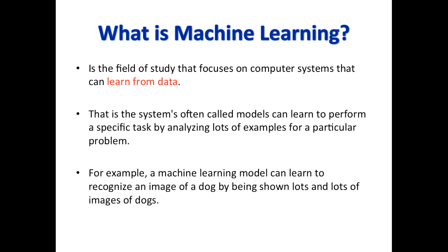Machine learning is the field of study that focuses on computer systems that can learn from data. All definitions of machine learning have one or two things in common: learning and applying what has been learned by building various models. Machine learning focuses on computer systems which can learn from data — systems often called models — that learn to perform a specific task by analyzing lots of examples. For instance, a machine learning model can learn to recognize an image of a dog by being shown lots and lots of images of dogs.